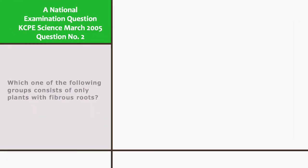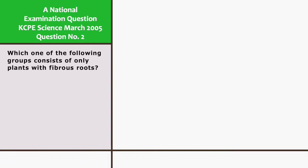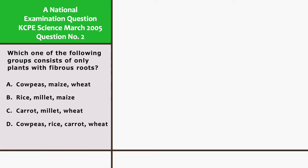Which one of the following groups consists of only plants with fibrous roots? A. Cowpeas, maize, and wheat. B. Rice, millet, and maize. C. Carrot, millet, and wheat. And D. Cowpeas, rice, carrot, and wheat.